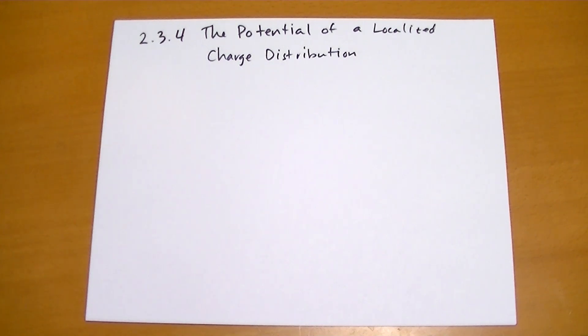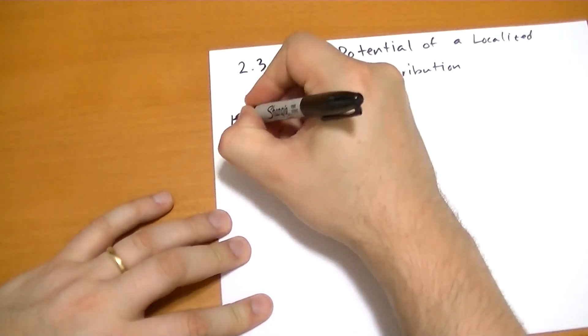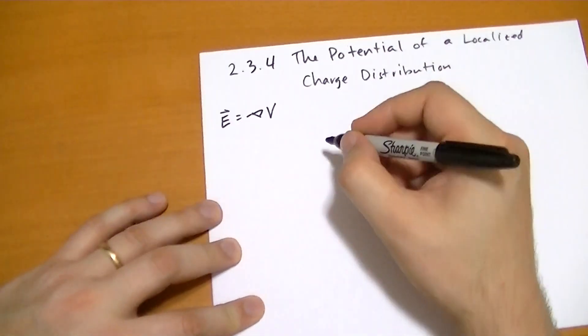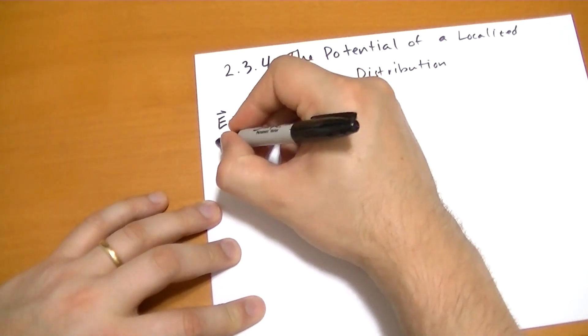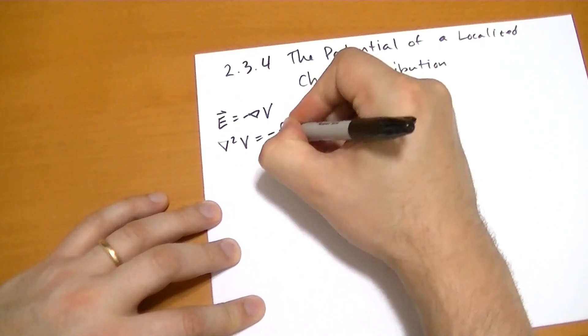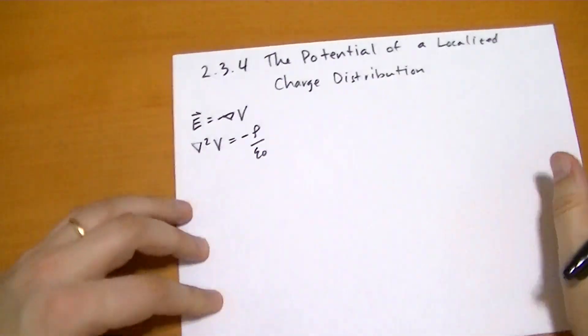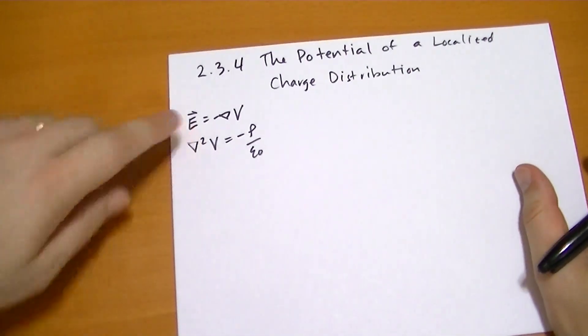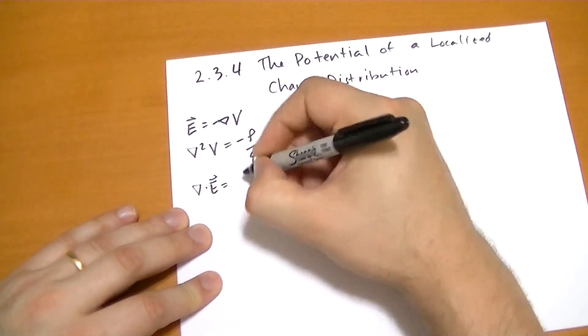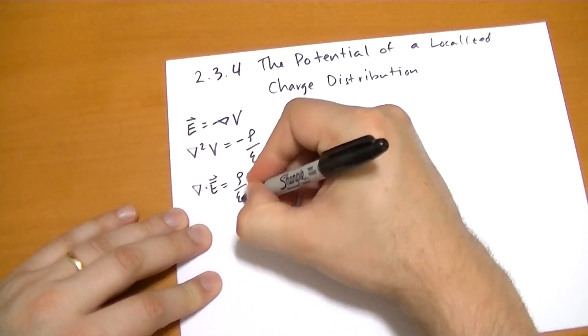So we know that we can relate V and E. I'll just write the equations over here on the side. E vector is negative the gradient of V. And we discovered that the Laplacian of V is equal to minus the charge density over epsilon naught. And this we got from the divergence of E, which is Gauss's theorem in vector form, rho over epsilon naught.